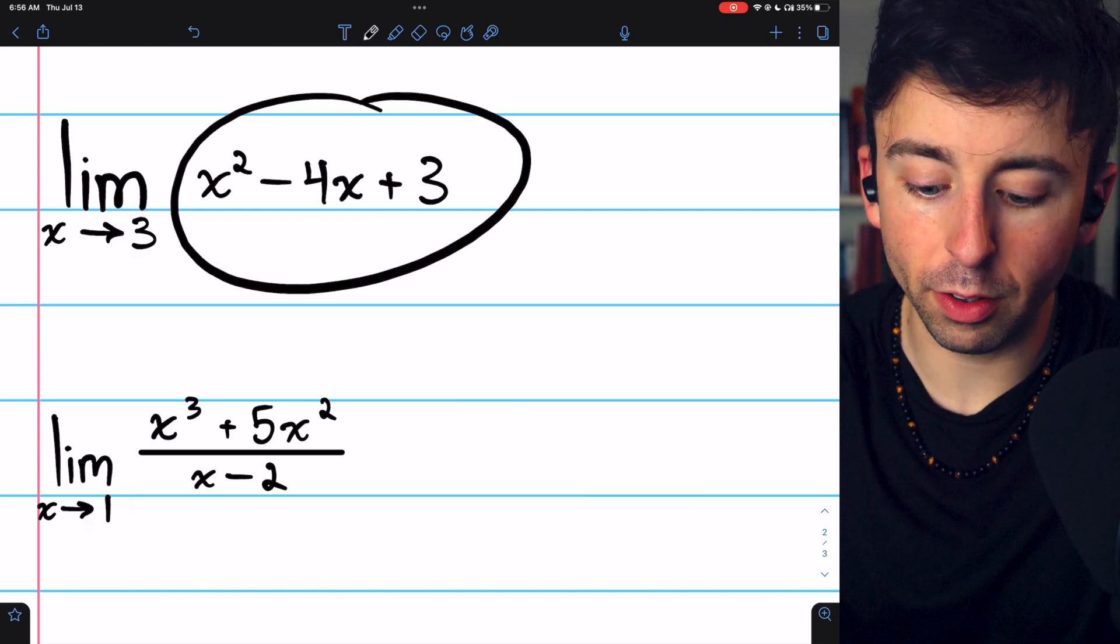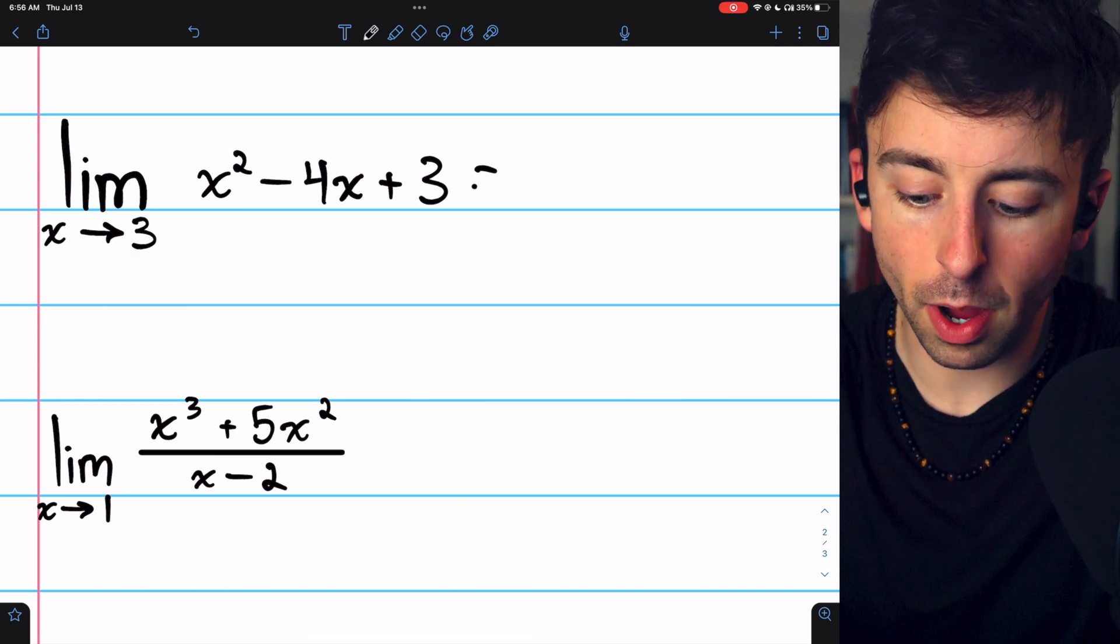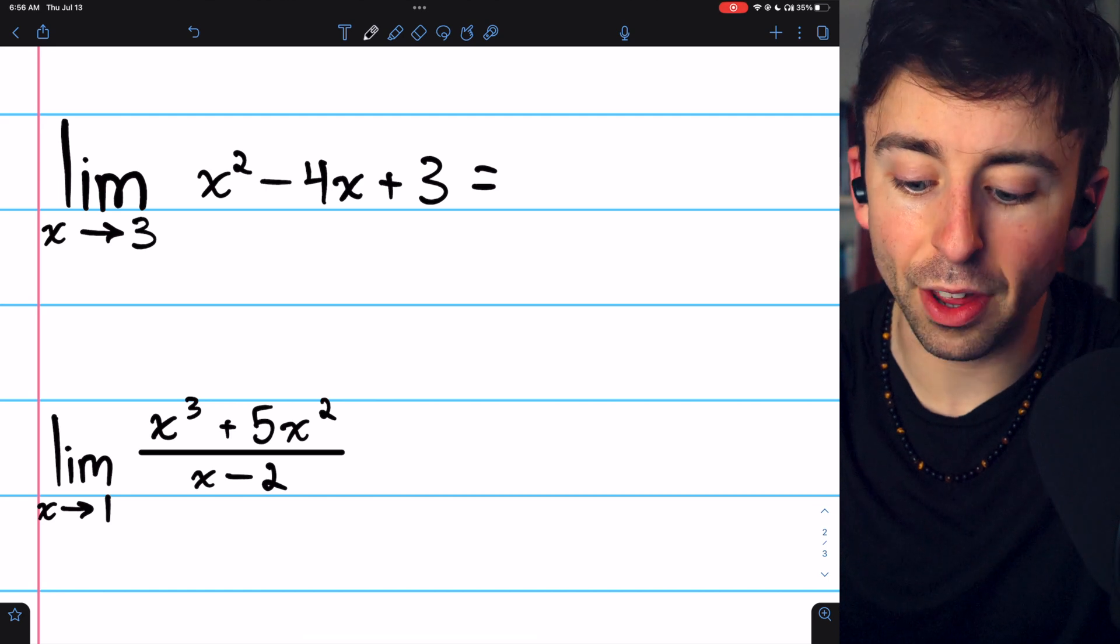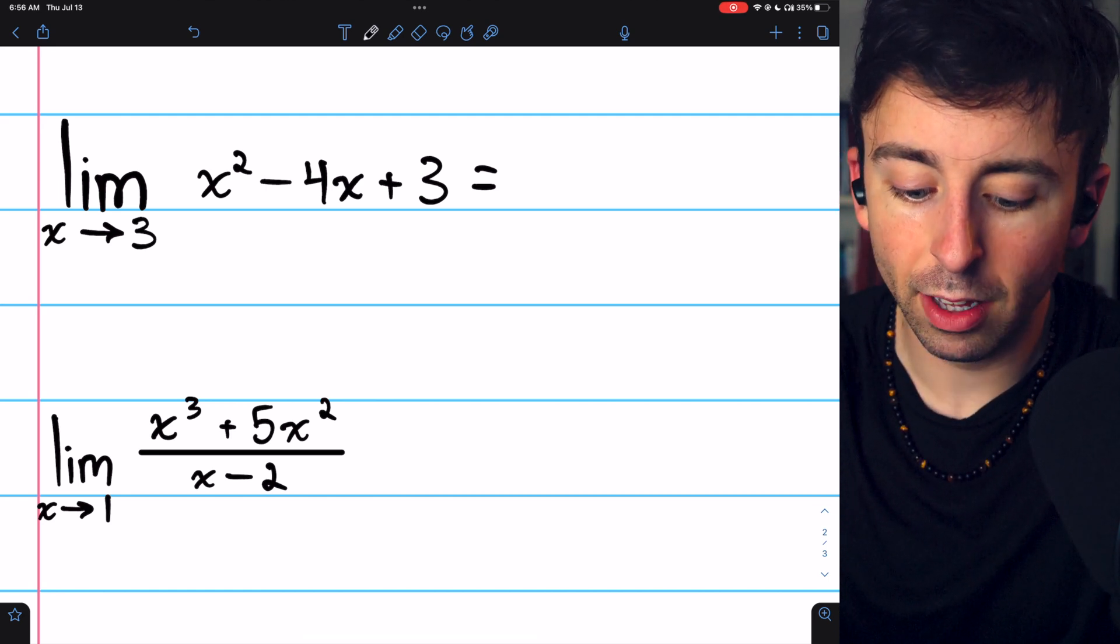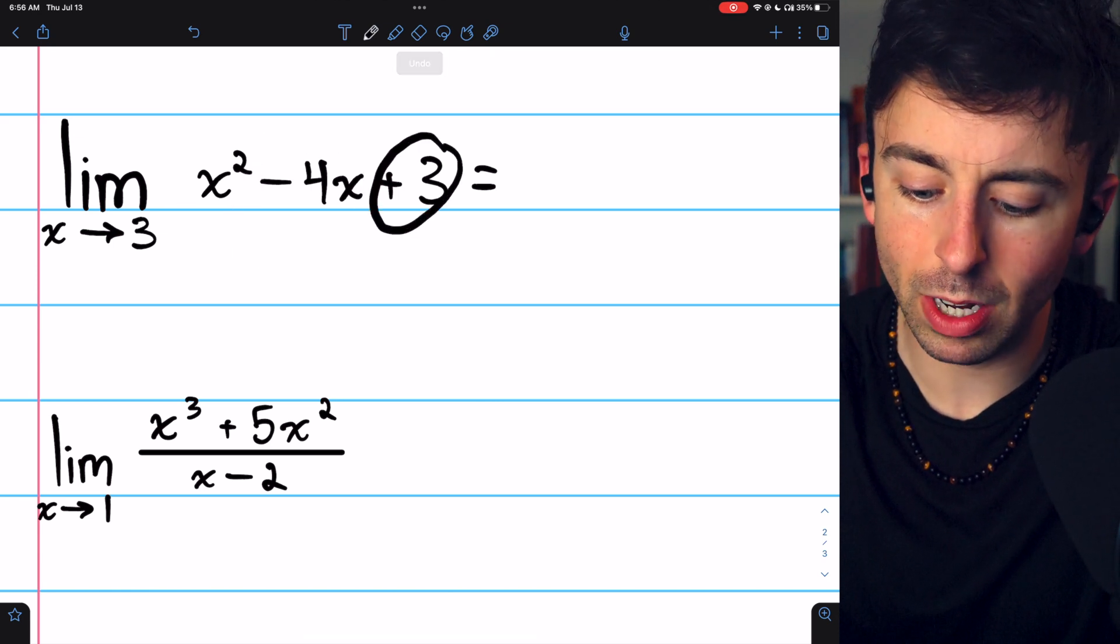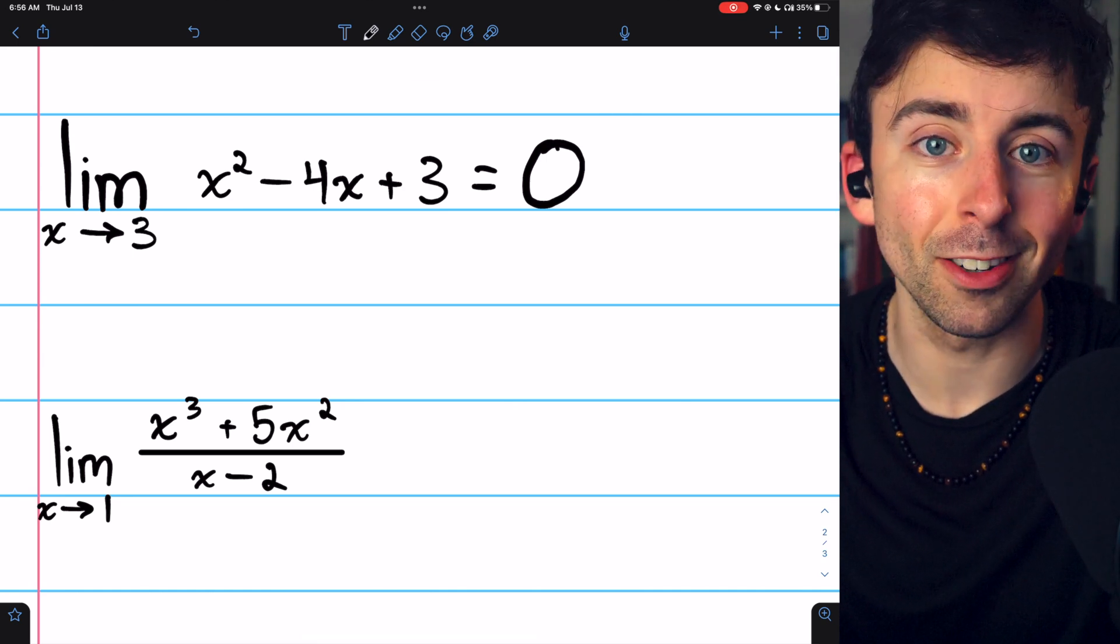The limit of x squared minus 4x plus 3, as x approaches 3, well, this is a polynomial. It's continuous. So since it's defined at 3, its limit must be its value at that point. So 3 squared, which is 9, minus 12, which is negative 3, plus 3, which is 0. Just plug 3 in. That's your limit.